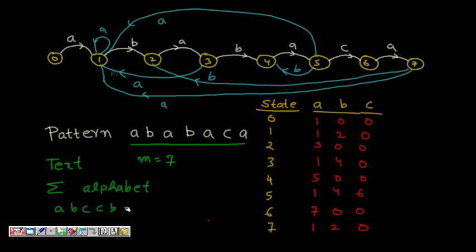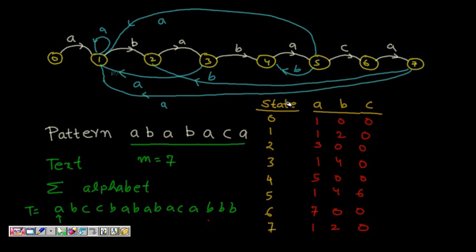The text is 'a b c c b a b a b a b a c a b b b'. We need to find if the pattern 'a b a b a c a' exists in this text. In our text, the alphabet consists of only three letters: a, b, and c. From that we construct a state machine.